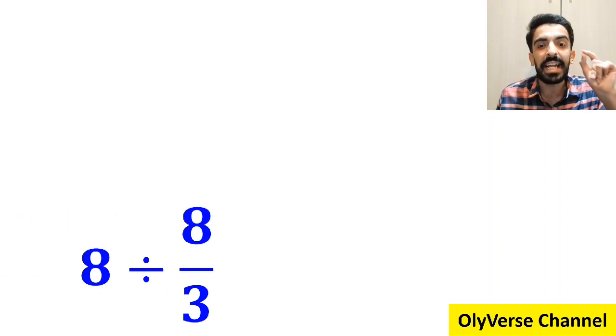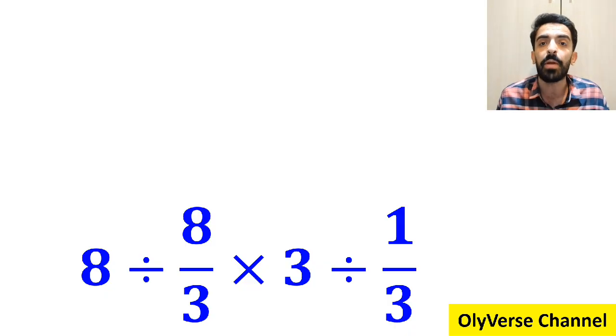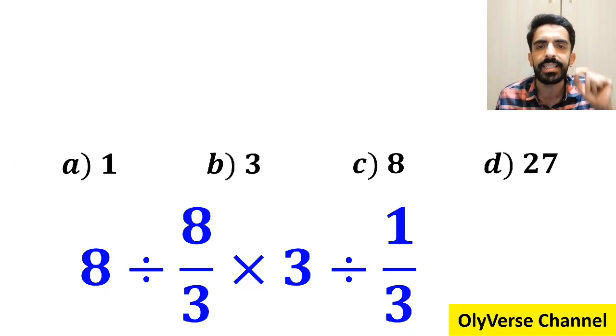What is the value of the expression 8 divided by 8 over 3 multiplied by 3 then divided by 1 over 3? Which option do you believe is the correct answer to this question?